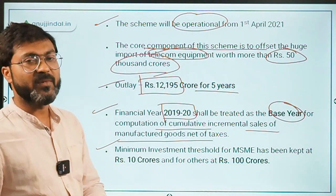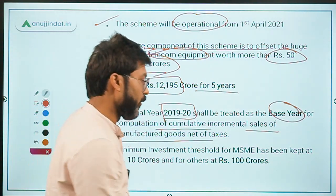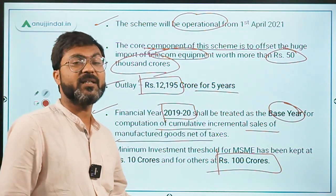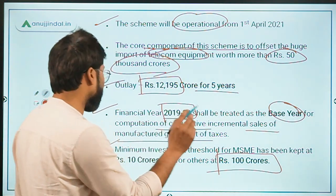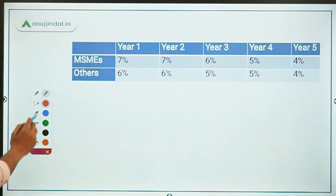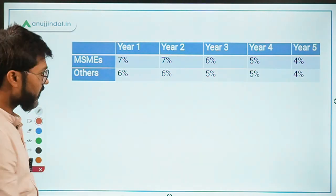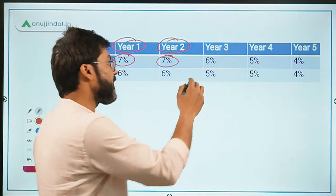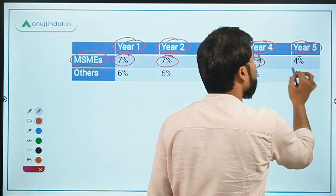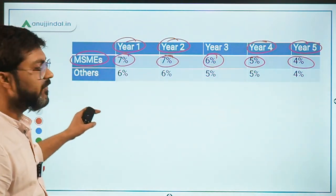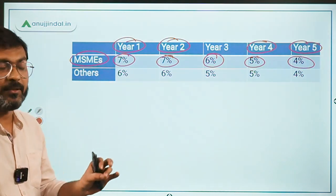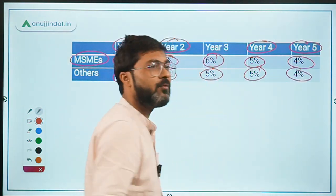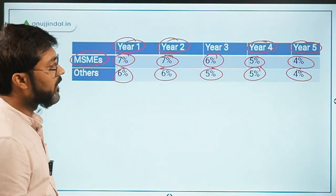The minimum investment threshold for MSMEs is 10 crores, while for others it is 100 crores. Regarding incentives: for MSMEs — 7% in year one, 7% in year two, 6% in year three, 5% in year four, and 4% in year five. For non-MSMEs, the incentive is 1% less than MSMEs for the first three years: 6% for years one and two, 5% for year three, 5% for year four, and 4% for year five.